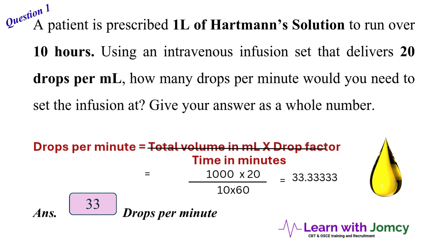The Hartmann's solution is to run over 10 hours, so we need to convert hours to minutes. 1 hour equals 60 minutes, so 10 multiplied by 60 equals 600 minutes. Applying the formula: 1000 multiplied by 20, divided by 600, equals 33.333.